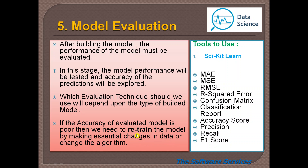If there is that much difference in prediction, the model accuracy is not good. We need to retrain the model by making essential changes in the data or handle the algorithm differently. For classification problems, this also holds — for example, if a model needs to predict whether it will rain tomorrow but says 'no' when the answer is 'yes,' disasters can happen.